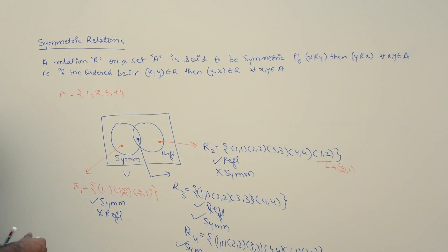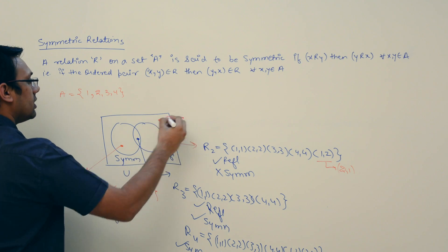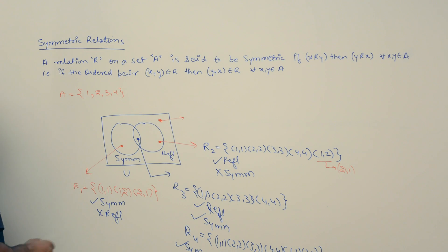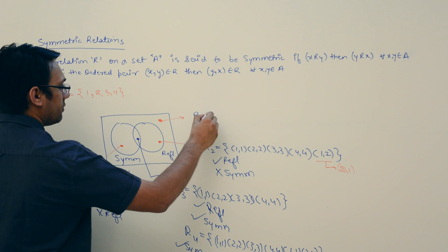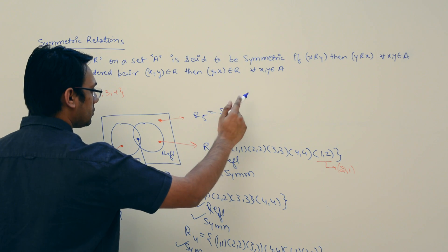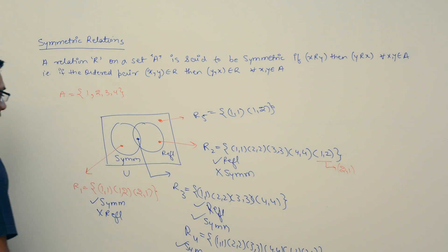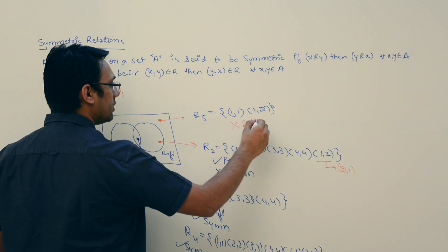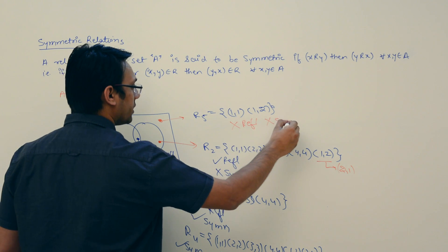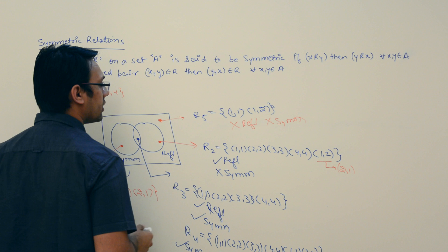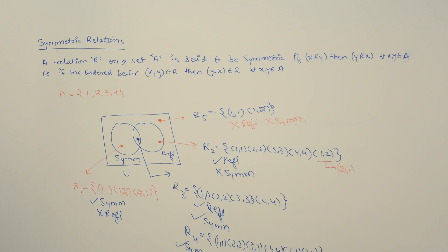Can I give an example of a relation that is neither reflexive nor symmetric? Yes. Consider R5 = {(1,1), (1,2)}. This relation is not reflexive and also not symmetric, because it does not have the pair (2,1). This illustrates all four regions of the relationship between symmetric and reflexive relations.